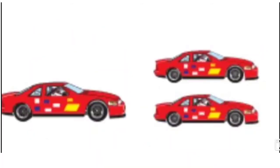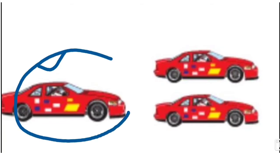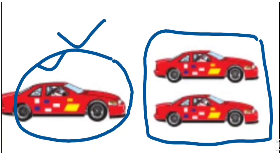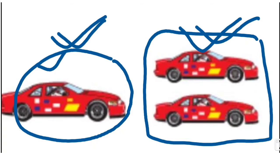What is this? This is a car. Do you like cars? Very good! How many cars are there? One car. And how many cars are here? Many cars. One car — many cars. One car — many cars. Very good, very nice!